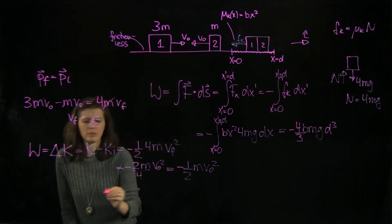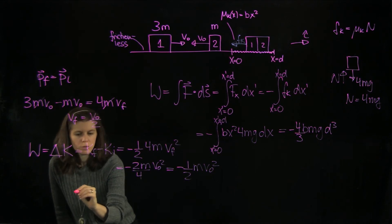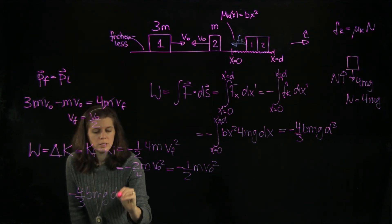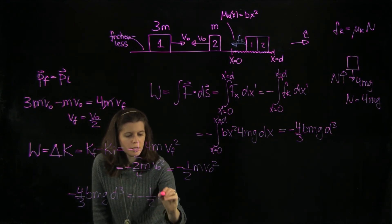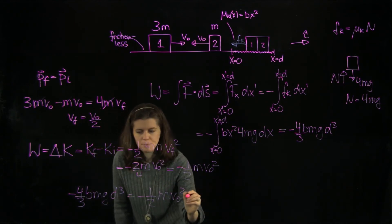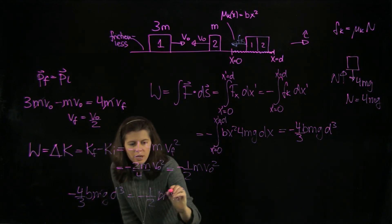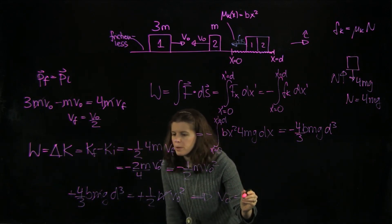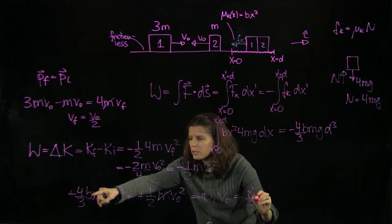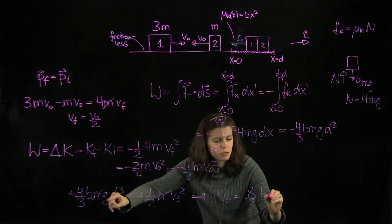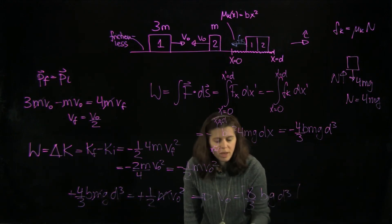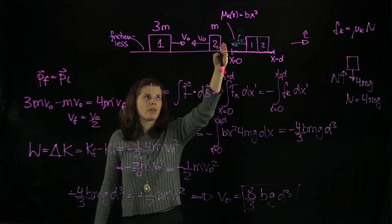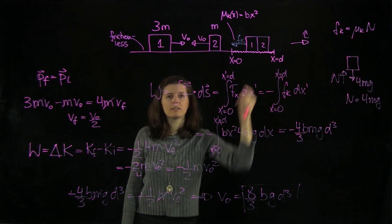Now we put it all together using the work-energy principle. Setting work equal to delta K: minus 4bmg·d³ over 3 equals minus one-half m·v0². The m's cancel, and solving for v0 gives v0 equals the square root of 8bgd³ over 3. This is the initial velocity with which the two blocks collided before sliding onto the rough surface and coming to rest at x equals d.